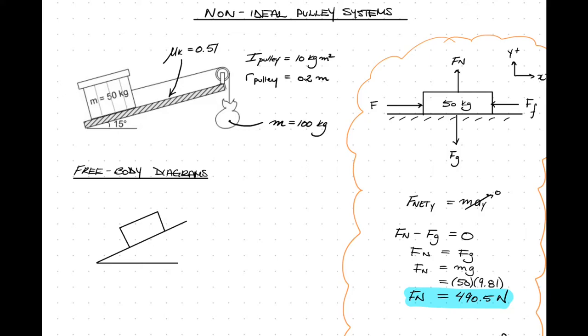Let's start with the block on the inclined plane. So we're going to draw, redraw that block on the inclined plane. And remember, it's a 15 degree incline. And again, we have four forces acting on the block. The force due to gravity, the normal force. Now we have tension T1, and the force due to friction that's trying to oppose the direction of motion.